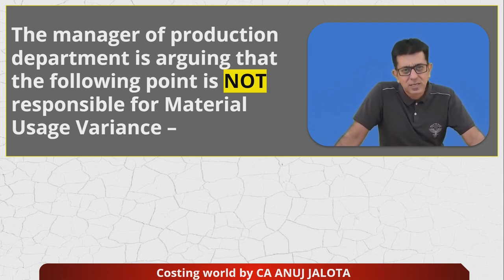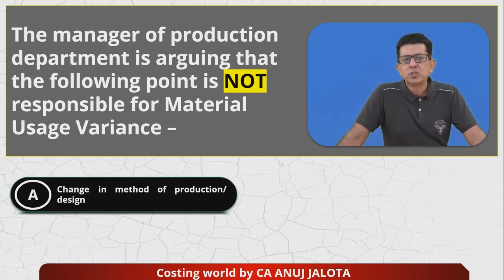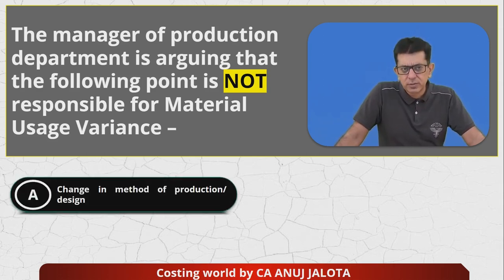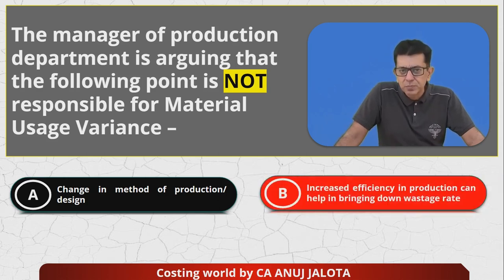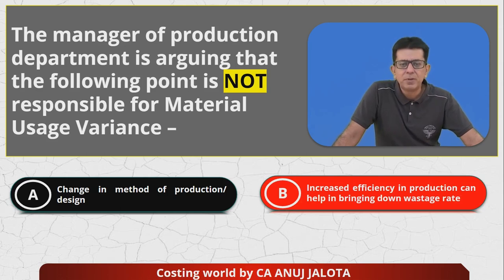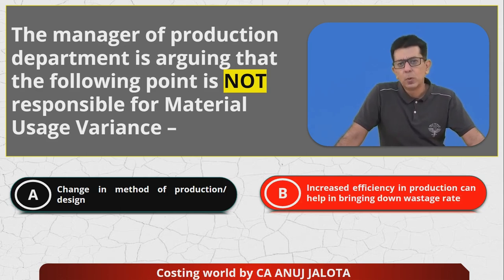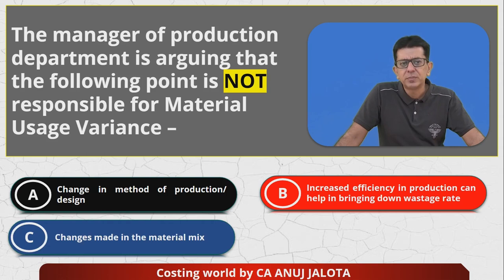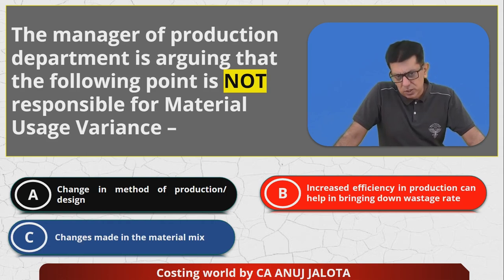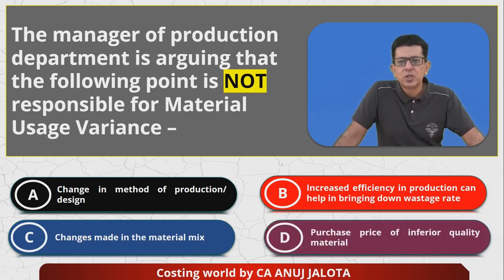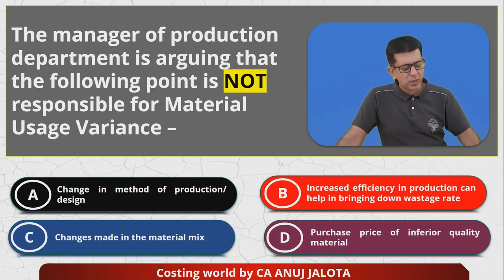Material usage variance further breaks up into material mix variance and material yield variance. Now the four options are: A — change in method of production or design; B — increase in efficiency in production, which can help bring down wastage; C — changes made in the material mix; D — purchase price of inferior quality material.